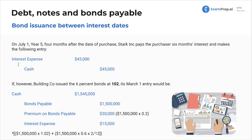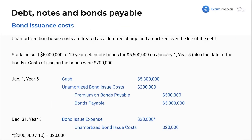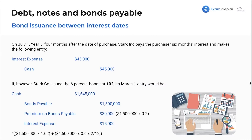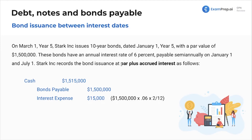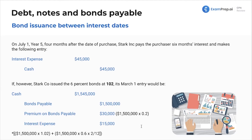If Stark Inc. issued the 6% bonds at 102, the March 1st journal entry would look different — this time at a premium. We have the same interesting situation where the bonds are dated before the issuance date, but now there is also a premium. In the journal entry: cash is straightforward, bonds payable is the clean number, interest expense is the same accrued amount for two months, and premium on bonds payable is calculated using the 1.02 factor. Premium on bonds — lots of fun, different situations here.